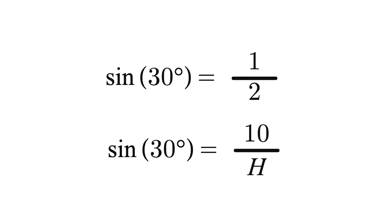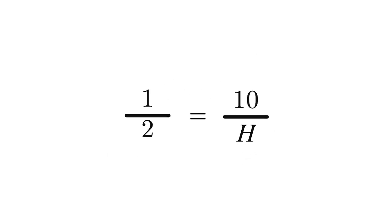For our triangle, the ratio of sine 30 degrees should be 10 over the hypotenuse. Interestingly, if we put sine 30 into our calculator, we get 1 over 2. Since the ratios should be the same, we can equate 10 over h with 1 over 2 to solve for h. Rearranging and solving, we find that our hypotenuse is 20 meters.